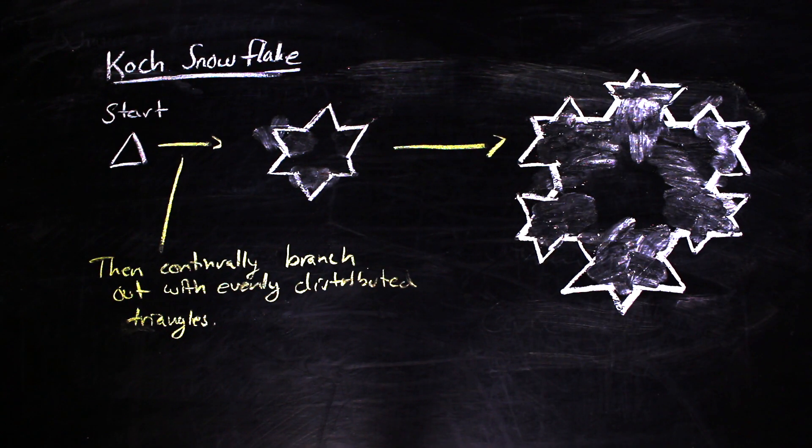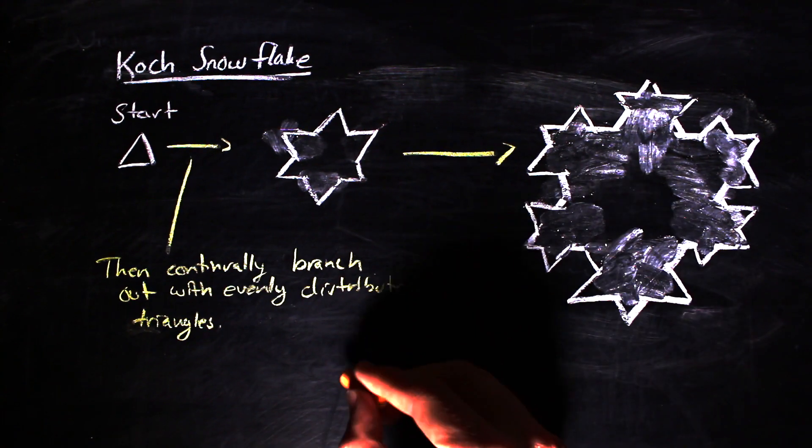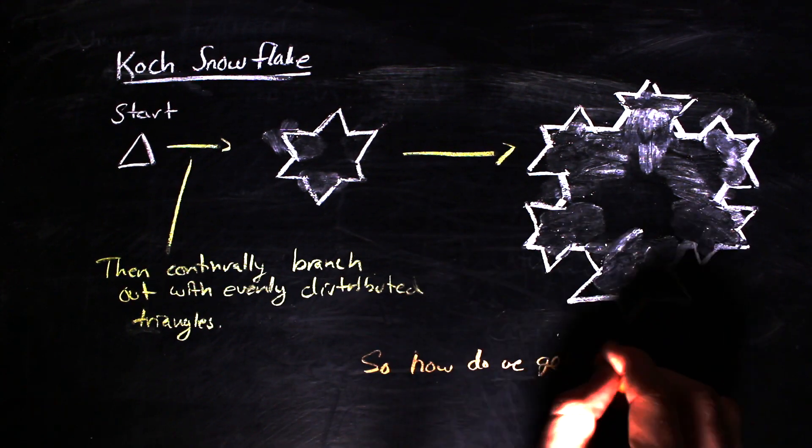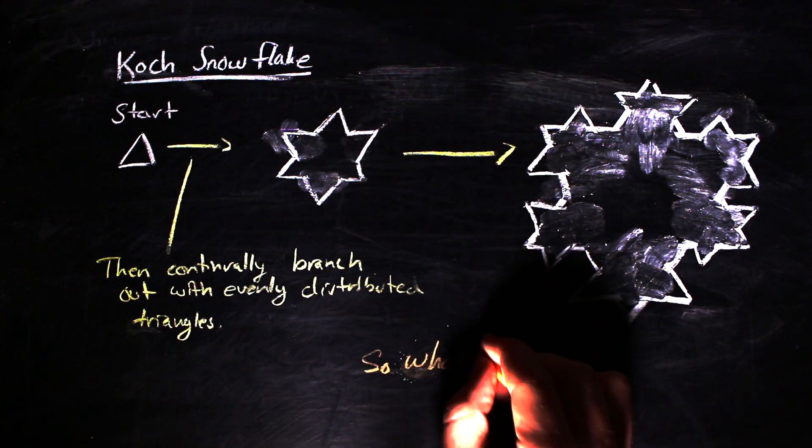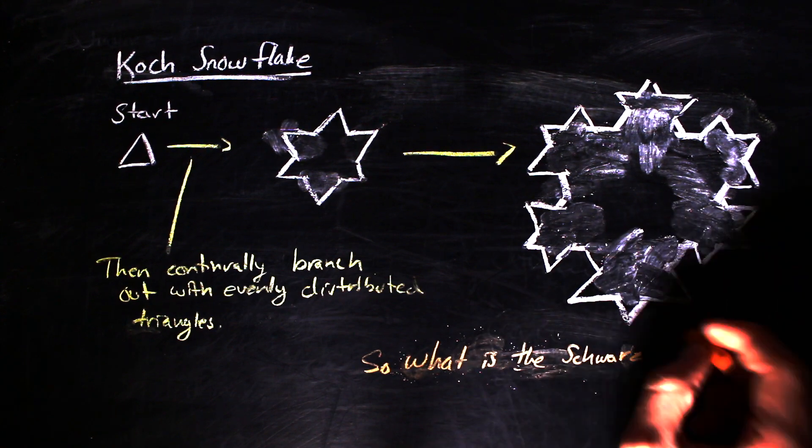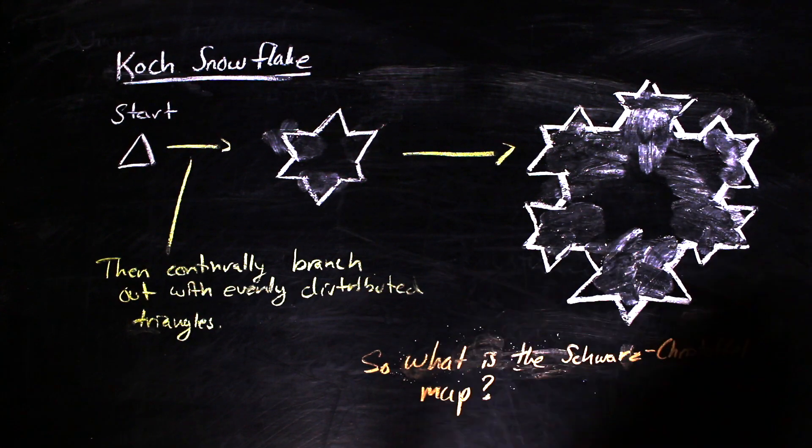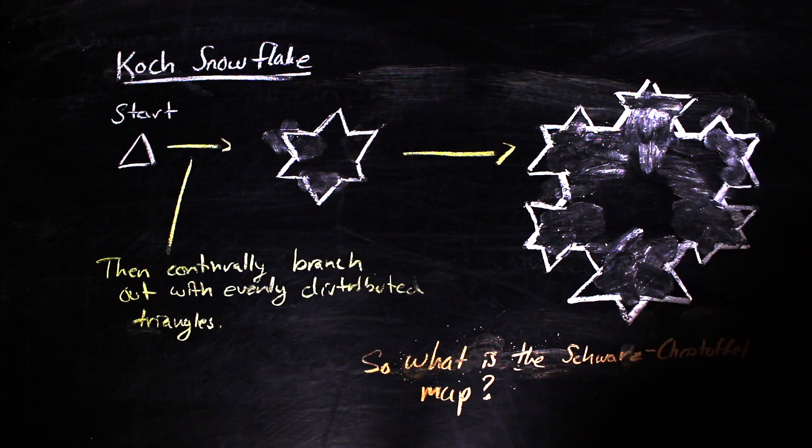In particular, the Koch snowflake is the result of an infinite process. So the way we constructed Schwarz-Christoffel maps before isn't necessarily going to make sense because of the infiniteness of the Koch snowflake when viewed as some sort of divergent polygon.